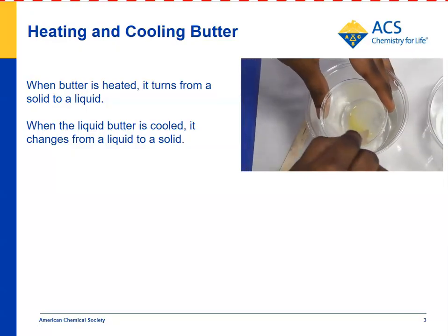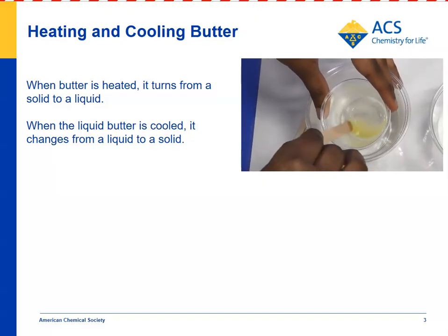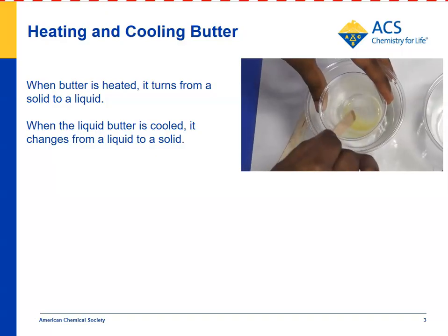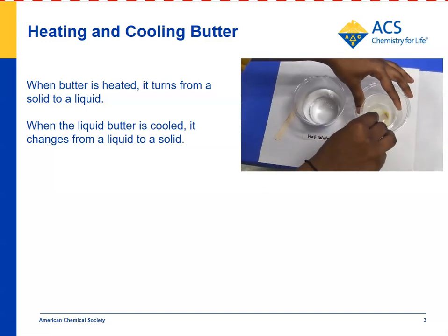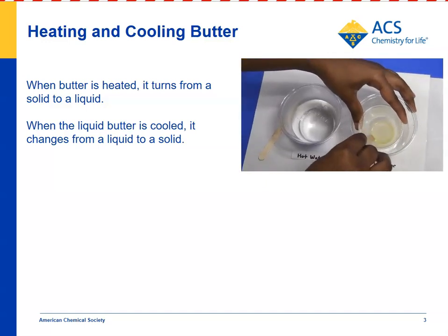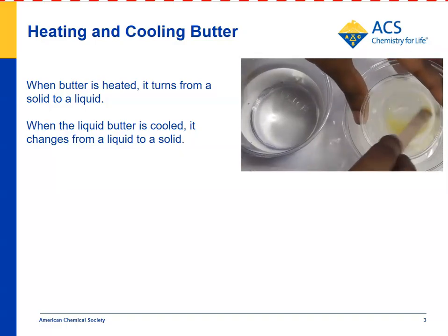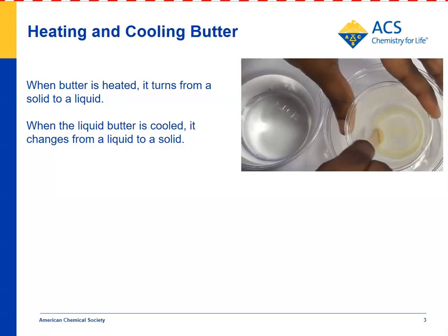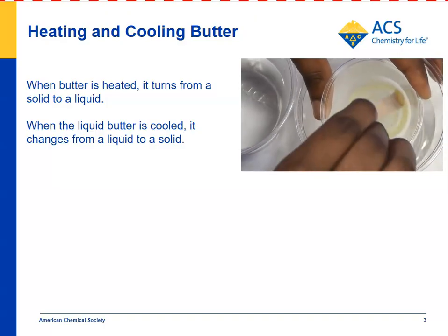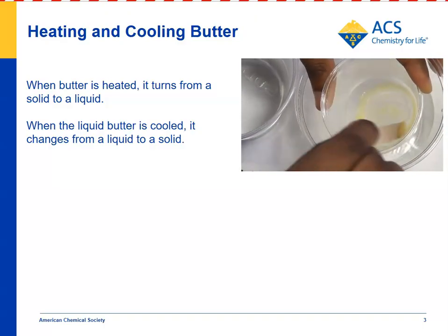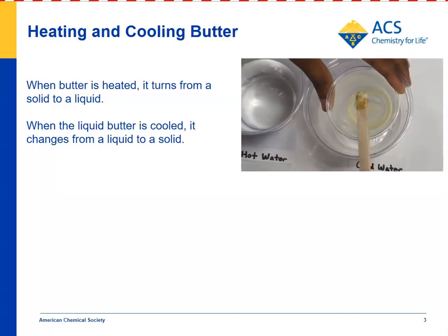Then you can take this liquefied butter and move it to cold water. This cold water has had ice in it and is very cold. Move it into the cold water and stir, and pretty quickly the liquefied butter begins to stiffen. Kids will see that it collects on the popsicle stick, it's starting to harden, it gets more difficult to stir, and it's sort of gone back to the way it was before — solid butter.